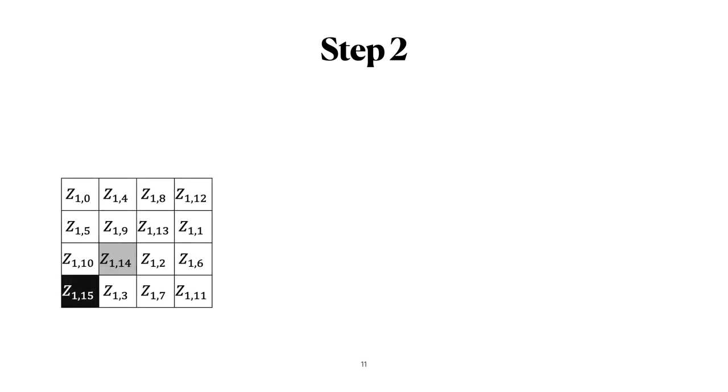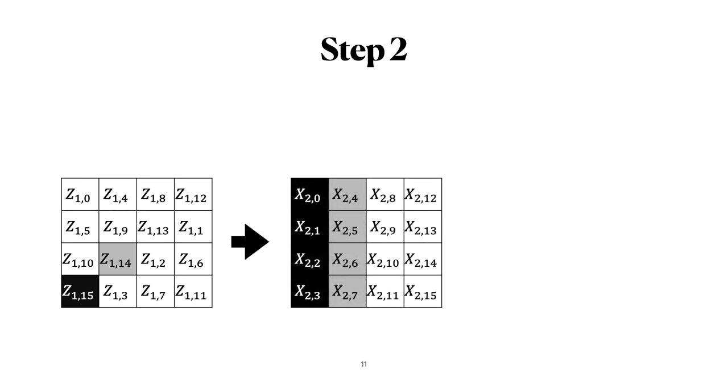After this first step, we have recovered byte 15 after the sub-bytes. Then because of shift rows, this byte will move to the first column. And then during mixed columns, it is mixed with the other bytes of that column. So our next step will again target the bytes after the sub-bytes operation. For example, the first byte of the first column will be the s-box applied to a key byte exhort with x to 0.